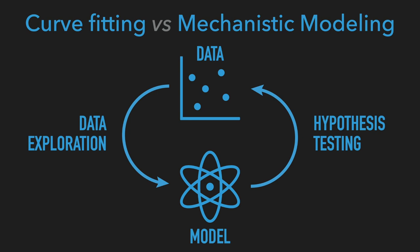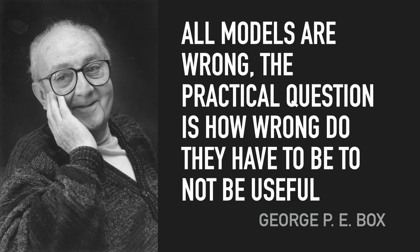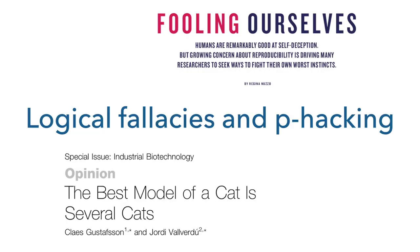This forms a virtuous cycle in which data and models interact to explain the world. As we have seen, data can be noisy, imprecise, and inaccurate, but it ideally reflects some true properties of the natural system. In turn, models are incomplete, overly simplified representations of reality, and need to be adjusted and re-evaluated. As Norbert Wiener wrote, the best material model of a cat is another, or preferably the same cat. And as George Box wrote, all models are wrong — the practical question is how wrong they have to be to not be useful. Let us not forget that the quest for a perfect model is moot, because the whole point of models is to generalize and simplify reality to make it somewhat understandable and predictable. To continue this subject onto logical fallacies in data science and the concept of p-hacking, please continue by reading Fooling Ourselves by Regina Nuzzo, and The Best Model of a Cat is Several Cats by Gustafsson and Valverde.